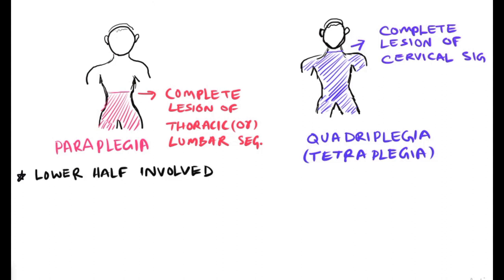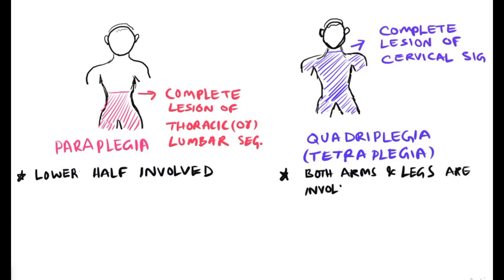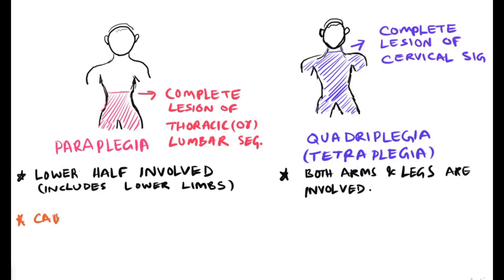The lower half of the body is involved in the paraplegic situation, whereas both arms and legs are involved in the quadriplegic situation.